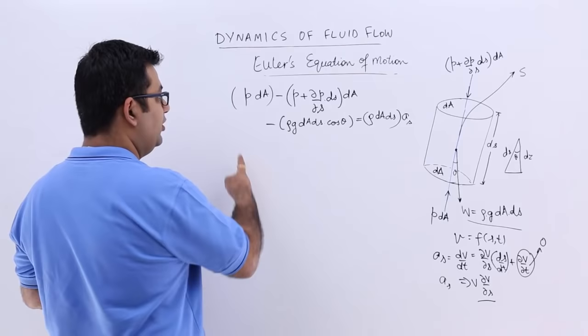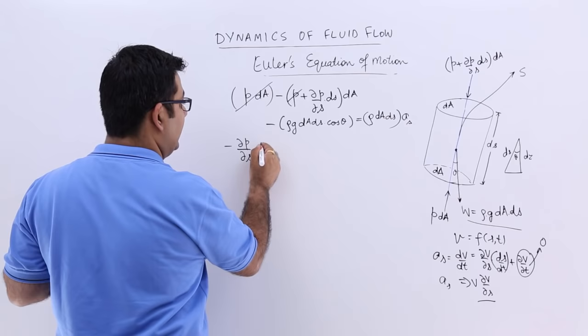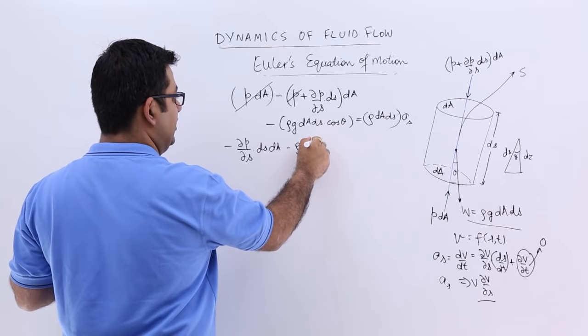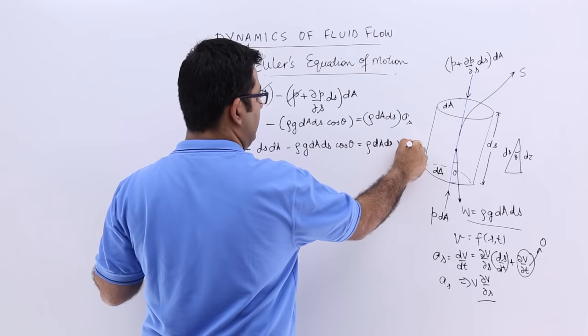When you open the brackets, you can strike off this and p over here. And you will be left with minus curly p upon curly s into ds dA minus rho g dA ds cos theta is equal to rho into dA ds into V into curly V upon curly s.